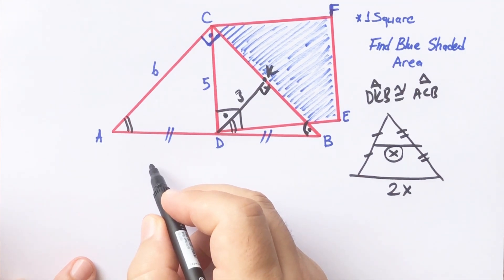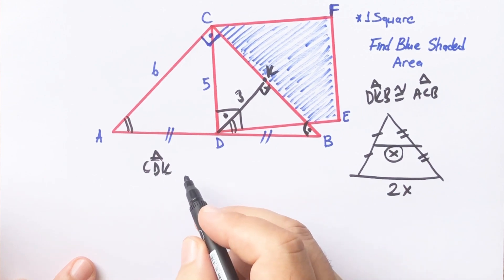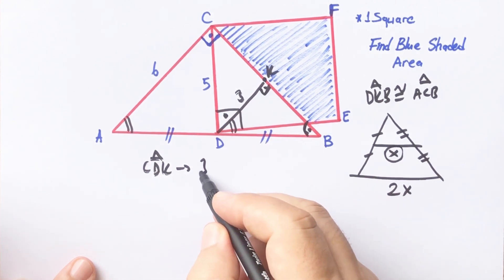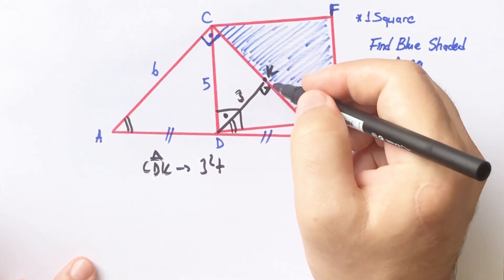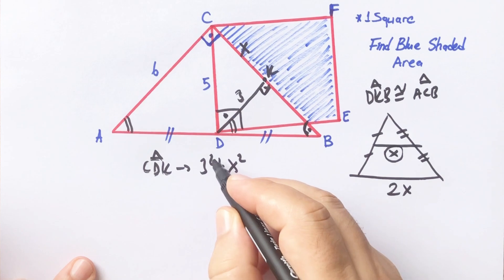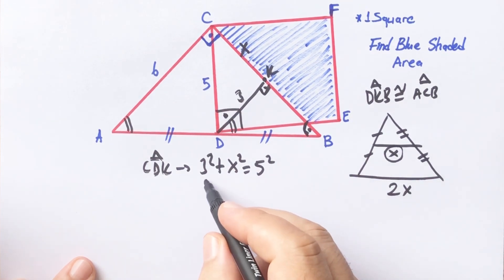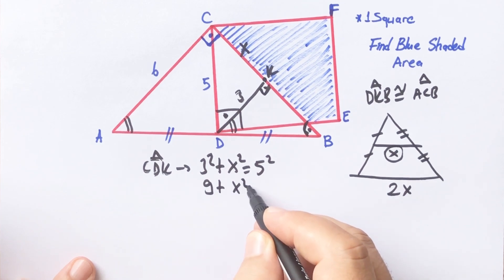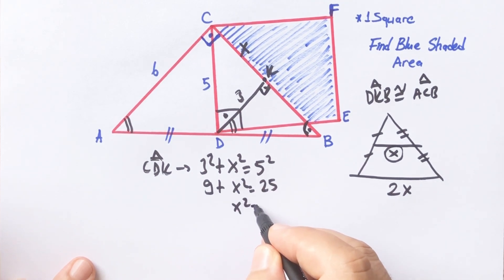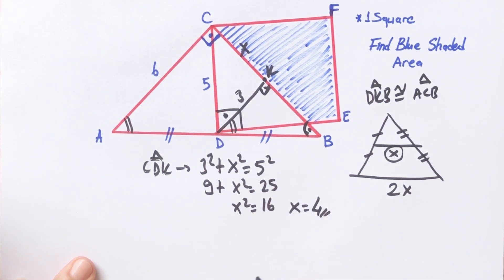In triangle CKB, let's apply the Pythagorean theorem: 3 squared plus x squared equals 5 squared. So 9 plus x squared equals 25, which means x equals 4 units.